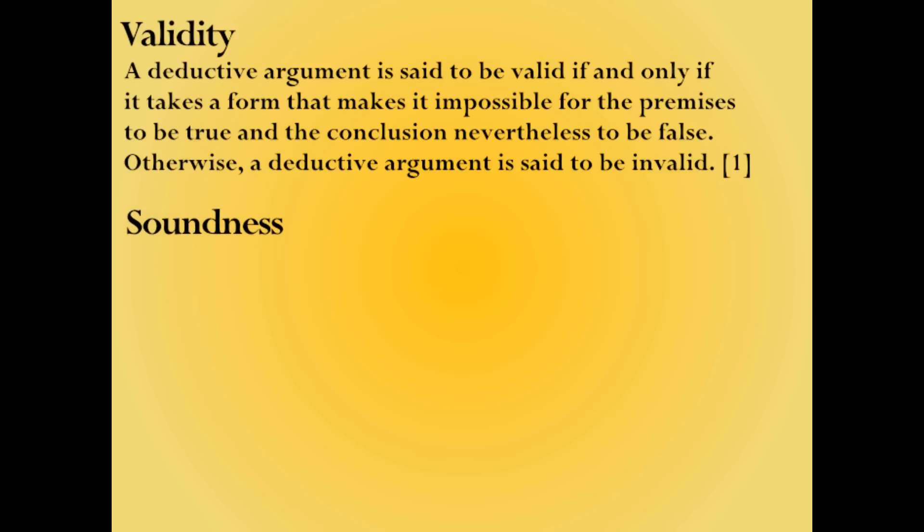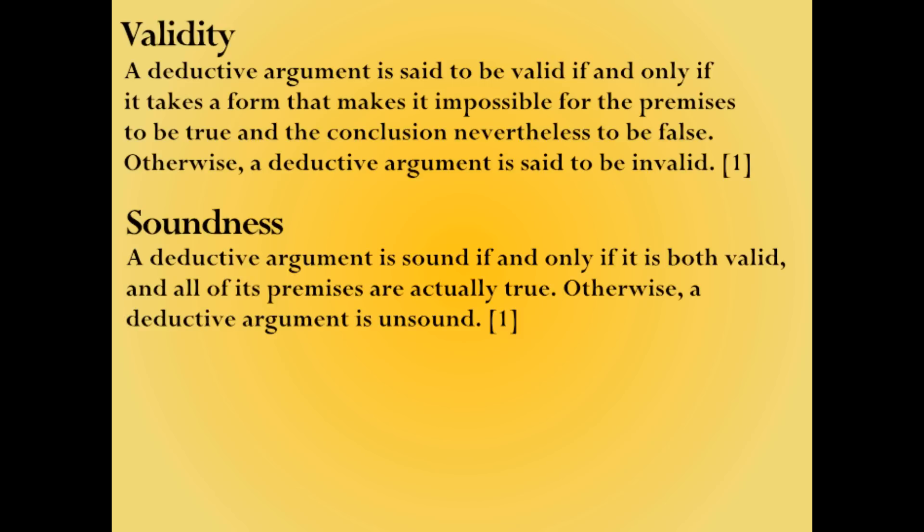A deductive argument is said to be valid if and only if it takes a form that makes it impossible for the premises to be true and the conclusion to nevertheless be false. Otherwise, a deductive argument is said to be invalid. A deductive argument is sound if and only if it is both valid and all of its premises are actually true. Otherwise, a deductive argument is unsound.